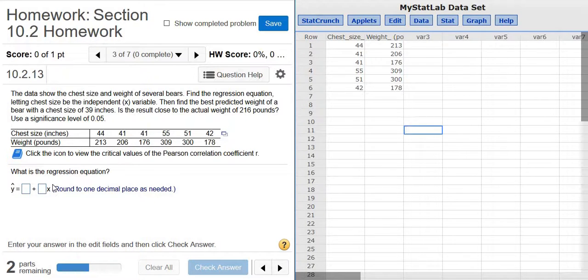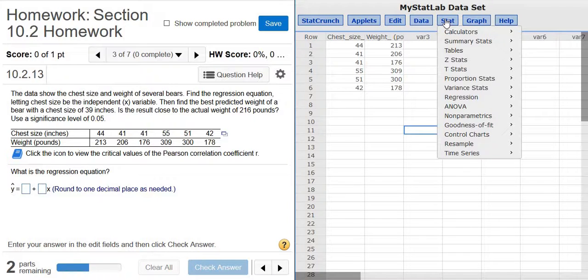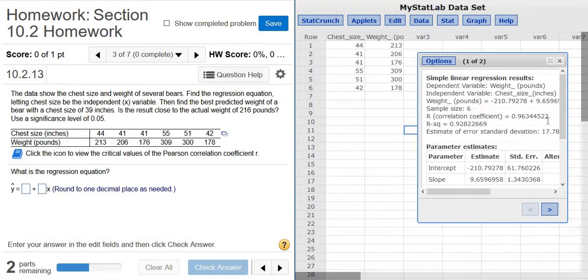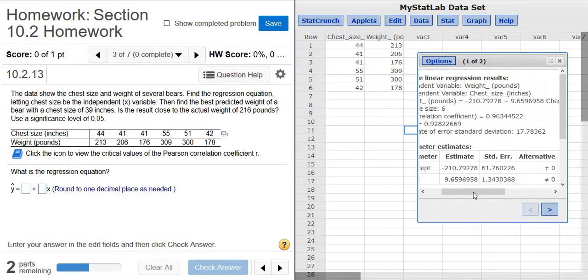The command to find the regression equation is Stat, Regression, Simple Linear. You left click and then you just pick the first thing. Okay, so the first thing is chest size, and then just pick the second thing. That's it. Just click Compute. Don't press anything else.